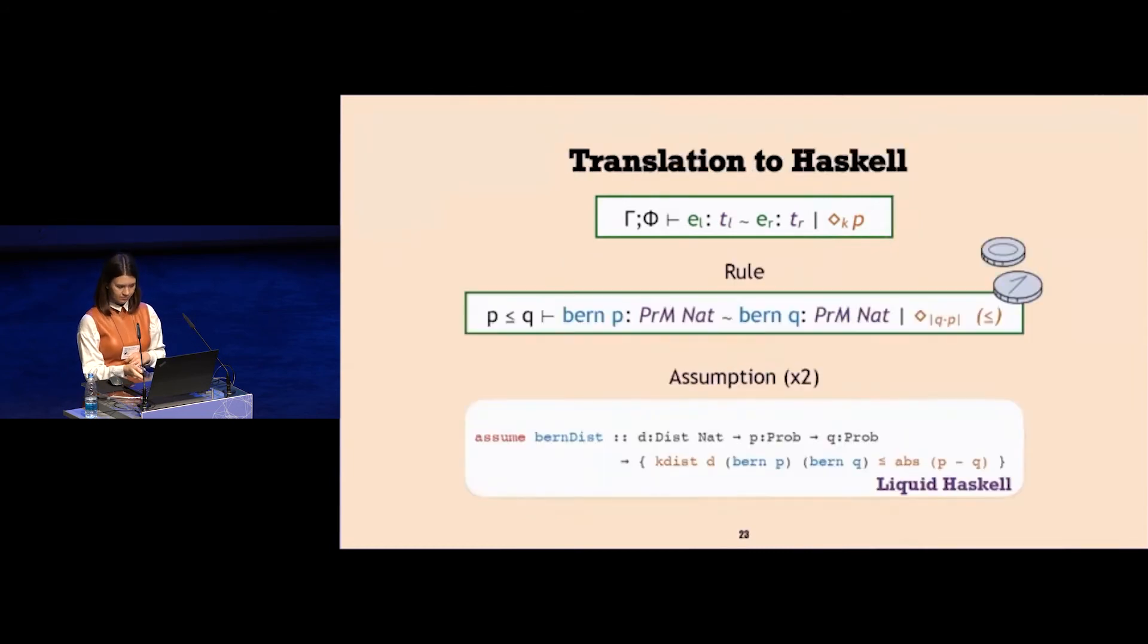This is the meaning of the judgment. As I promised, we're going to verify our system in Haskell, so I need to translate it to our refinement type system. First of all, I translate our typing rules which I have for each of the primitives, such as for example Bernoulli distribution. This typing rule for Bernoulli distribution says that the distance between two calls to Bernoulli is less or equal to absolute value of the difference of the arguments, and the lifted relation, the predicate, is less or equal if we knew that arguments of Bernoulli were also related by less or equal.